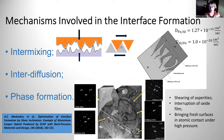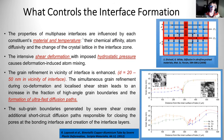Here you can see intermetallics formed between aluminum and copper as a result of severe plastic deformation. By changing parameters of SPD, we can trigger different mechanisms or sequences of mechanisms and change the width and severity of the interface. The properties of these multiphase interfaces are influenced by each constituent material, temperature, chemical affinity, atom diffusivity, and the change of the crystal lattice in the interface zone.